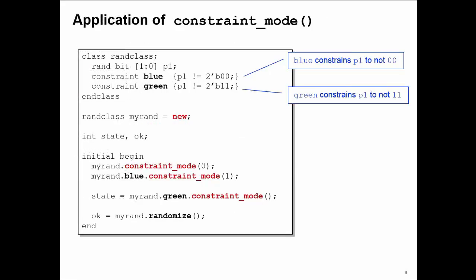Let me show you an example of constraint mode. Here I have my randclass with two constraints, blue and green. I create an instance of randclass in the handle myrand. The first thing I do here is call a constraint_mode task directly off the myrand instance.